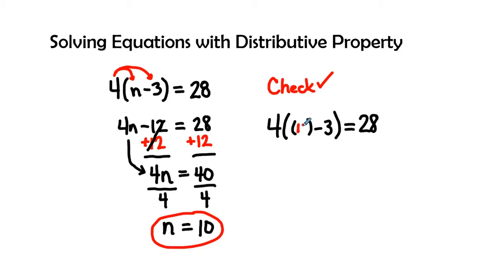Let's plug in the 10. We look at 10 minus 3 is 7, so now we have 4 times 7 equals 28. Therefore 4 times 7 is 28.